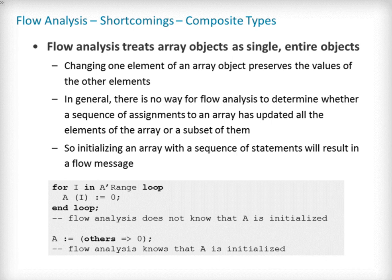Another common cause for false alarms is the way composite types are handled in flow analysis. Array objects are treated as single entire objects, meaning that an update to an element of the array is handled as an update of the entire array object. This makes reasoning about global variable access and dependencies less precise, and also affects detection of reads of uninitialized variables. It is often impossible for flow analysis to decide if the entire object has been initialized, even in really simple cases. For example, after initializing every element of an unconstrained array A with 0 in a loop, we may still get a flow message stating that the array is not initialized. To solve this, a user can either use an aggregate assignment, or, if that is not possible, verify initialization of the object by other means.